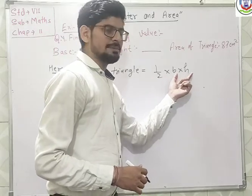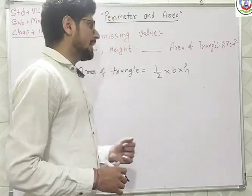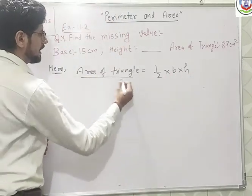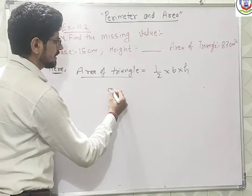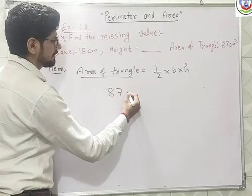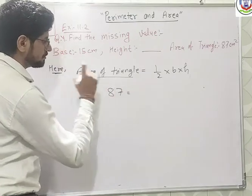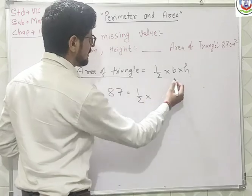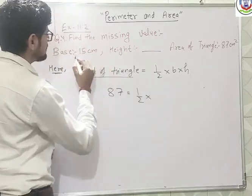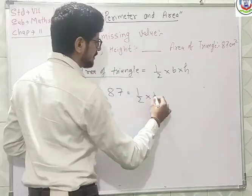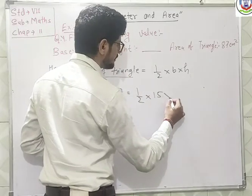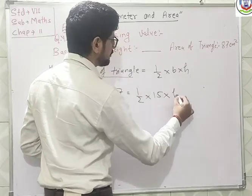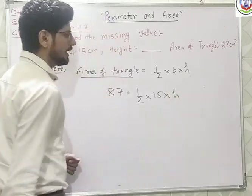So here we have to find the height of the triangle. Given: area of triangle is equal to 1/2 multiply base multiply height. We have given the area of triangle that is 87, then 1/2 multiply base — base we have 15cm — and height we have to find.